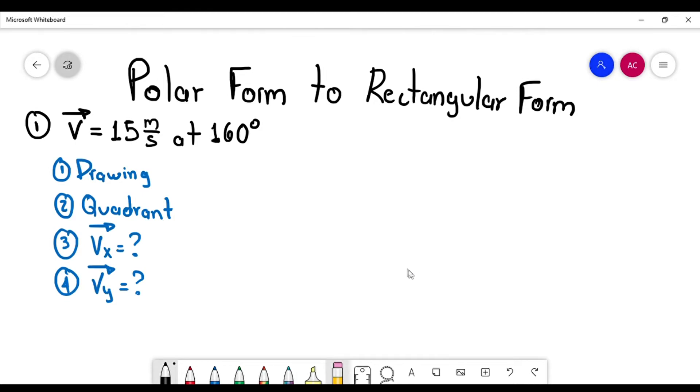And this is the example that we have. The velocity vector equals 15 meters per second at 160 degrees. So the things that we are going to find are the drawing, the quadrant, the X component, and the Y component.